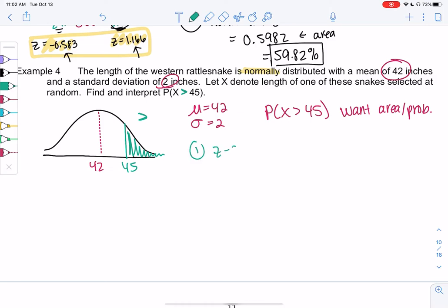So my z-score will be 45 minus the mean of 42 all over 2. I'll go ahead and do that, and I got 1.5. So z equals 1.5.